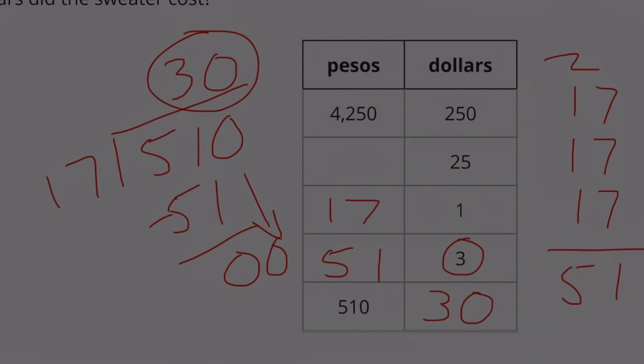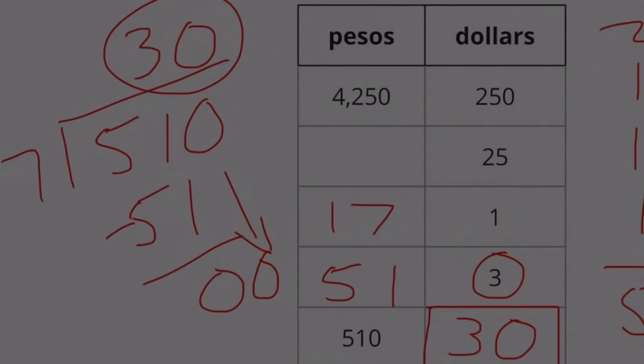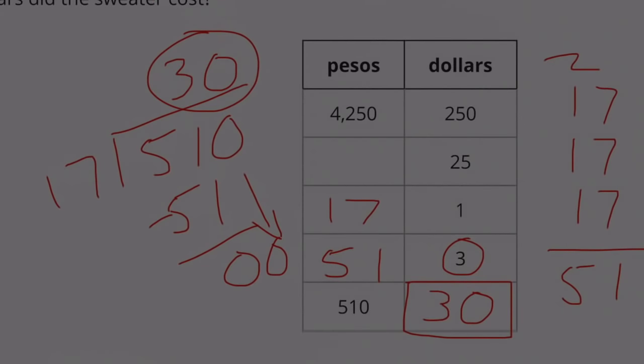510 divided by 17 equals the cost of the sweater in dollars. 30 is 10 times the value of 3 and 510 is 10 times the value of 51. So we know that the sweater costs $30.